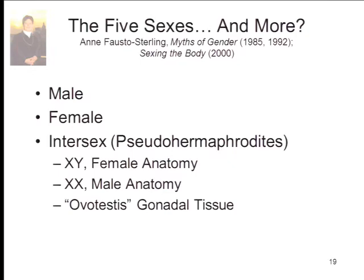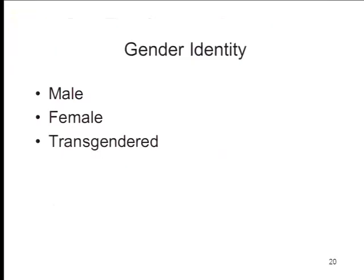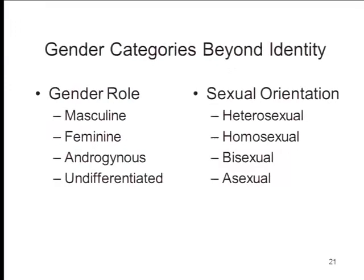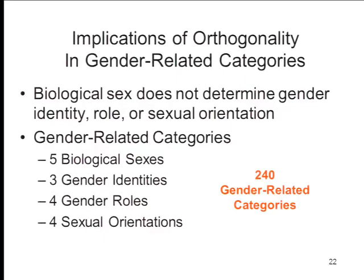Beyond biological sex, we have gender identity — how you think of yourself. People who are biologically male may identify as female, and vice versa; some identify as transgender. Then we have gender role — whether you're conventionally masculine or feminine as defined by your culture. Some people classify as androgynous, having both highly masculine and highly feminine characteristics; others are undifferentiated. And beyond gender identity there are issues of sexual orientation: heterosexual, homosexual, bisexual, asexual. If Fausto-Sterling is right and there are five biological sexes, by three gender identities, by four gender roles, by four sexual orientations, you end up with 240 gender-related categories.